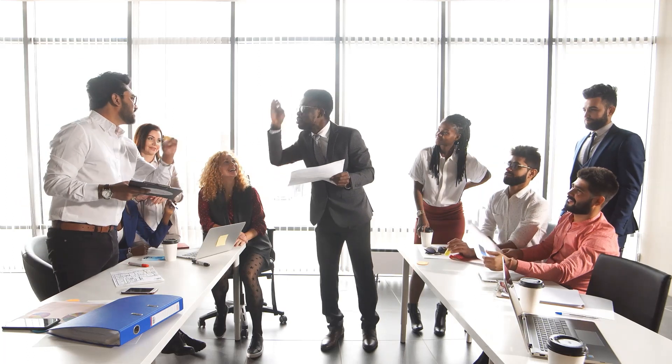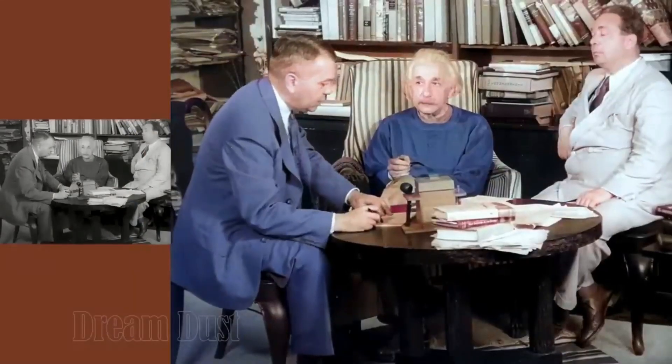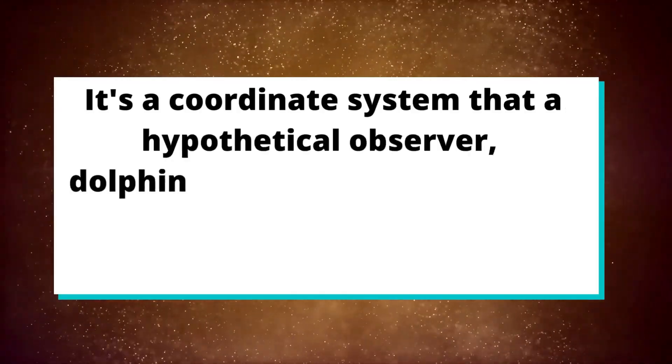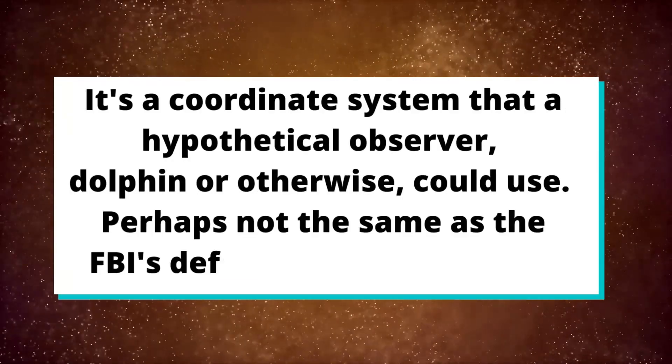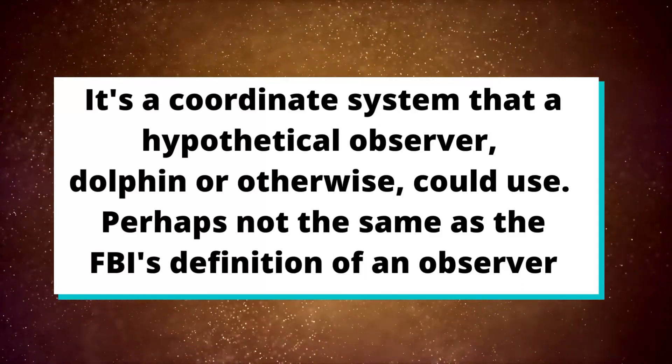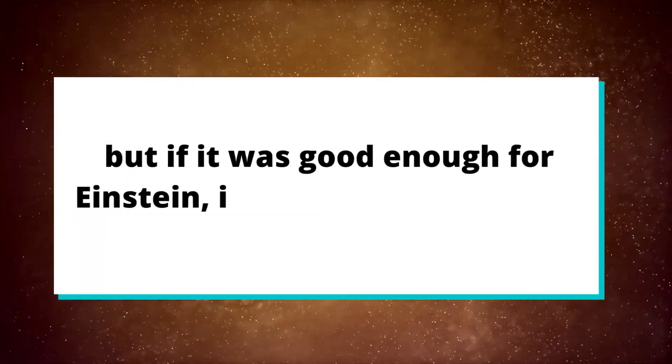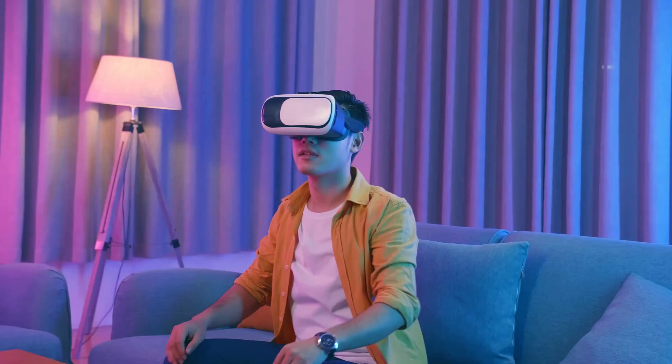To avoid this interesting discussion, we'll use observer like Einstein did as a coordinate system. It's a coordinate system that a hypothetical observer, dolphin or otherwise, could use. Perhaps not the same as the FBI's definition of an observer. But if it was good enough for Einstein, it's good enough for us. According to Einstein's assumption, any coordinate system should be equally capable of describing the physical world.